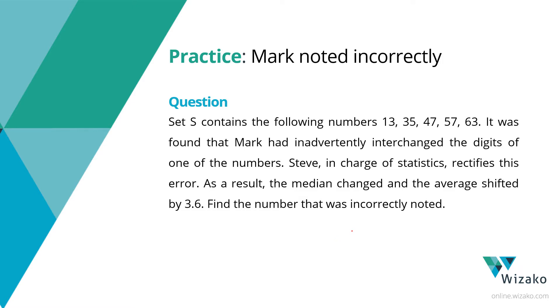Set S contains the following numbers 13, 35, 47, 57, 63. It's got 5 positive integers. It was found that Mark had inadvertently interchanged the digits of one of the numbers.